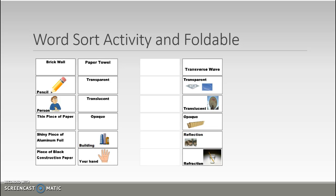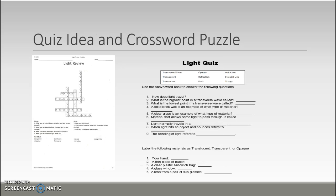Once the word sort is completed, you can move into the Kahoot game, with the link on the earlier slide. After the Kahoot game, you could facilitate a discussion at the end of the lesson. Some extension ideas include a review crossword puzzle and an optional written quiz.